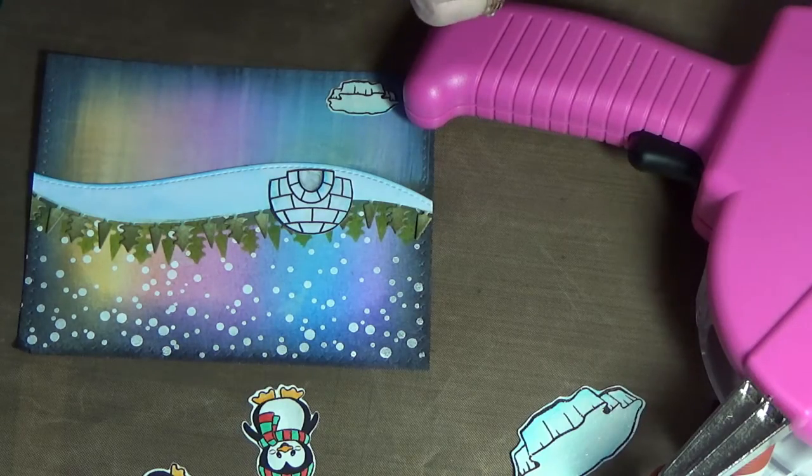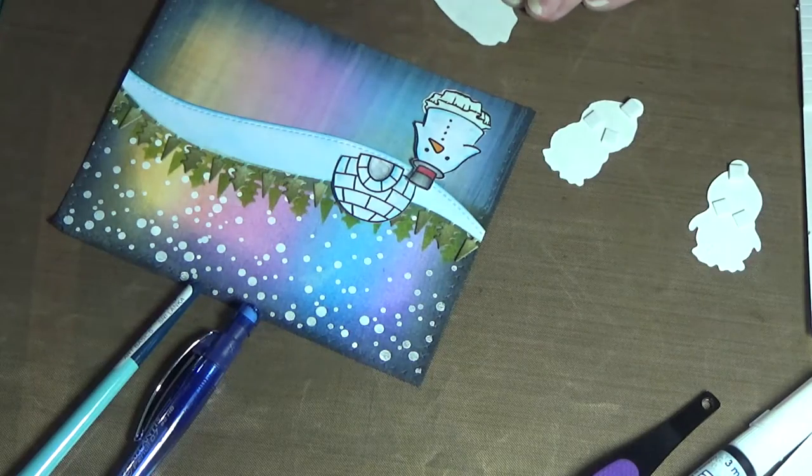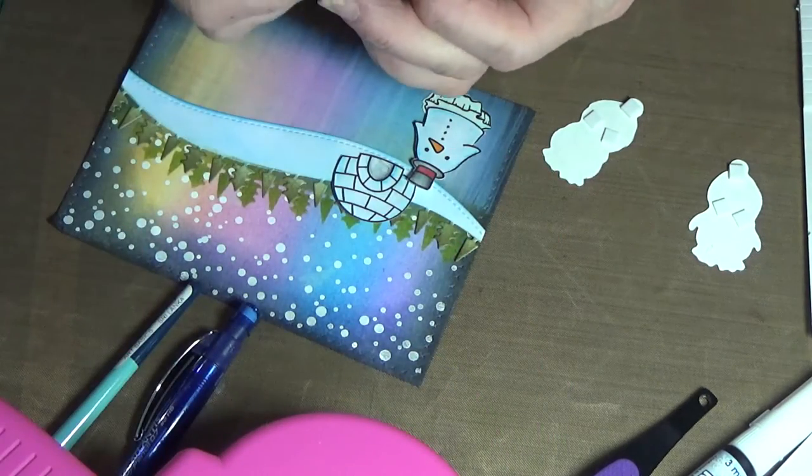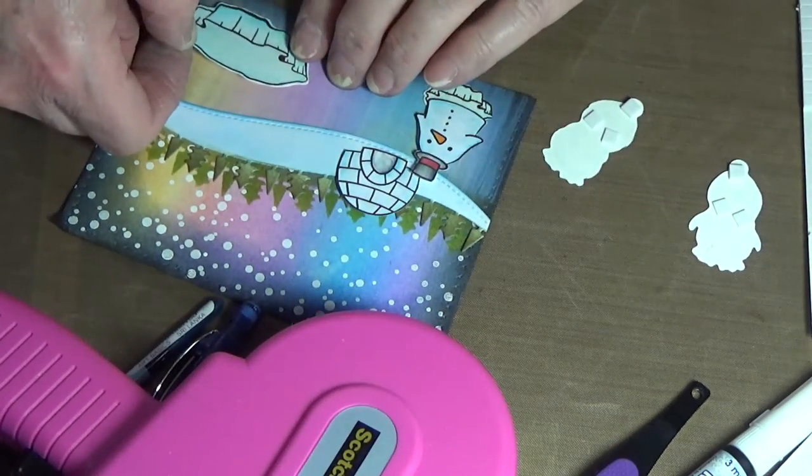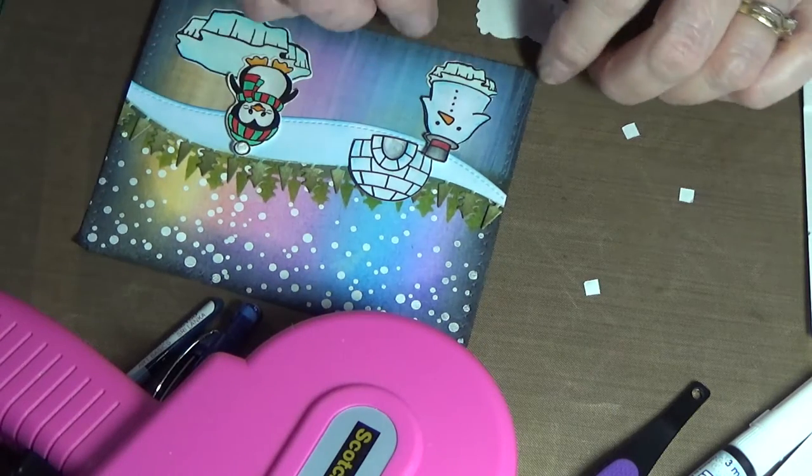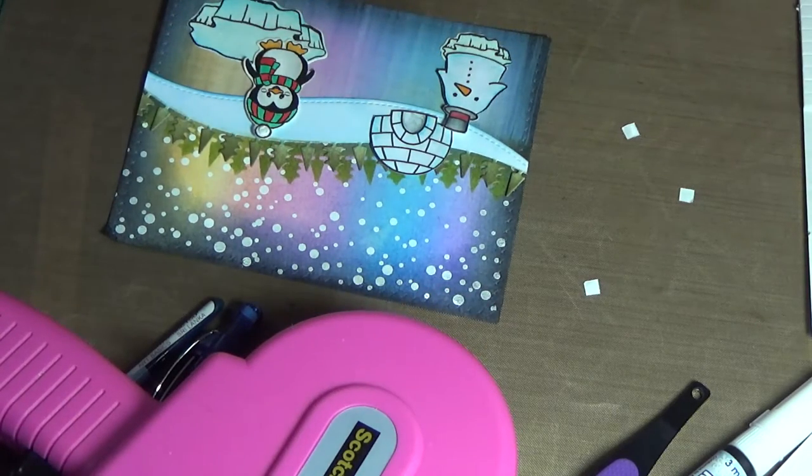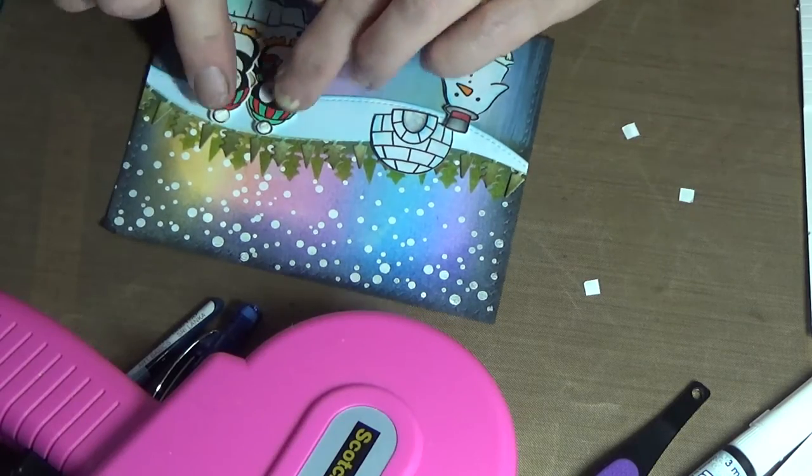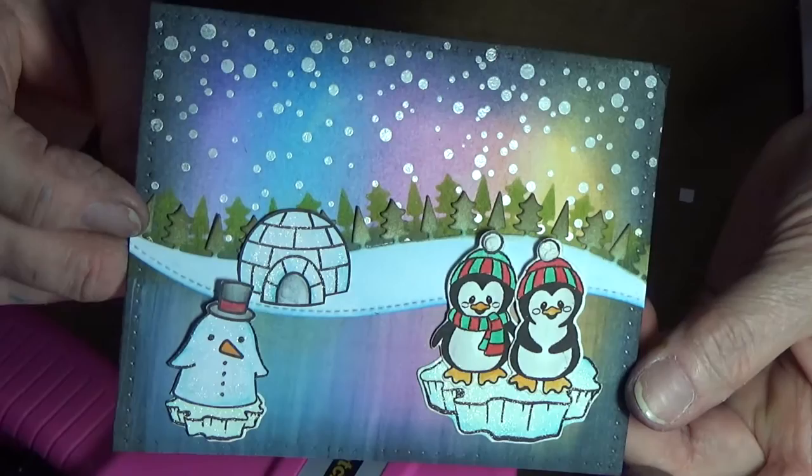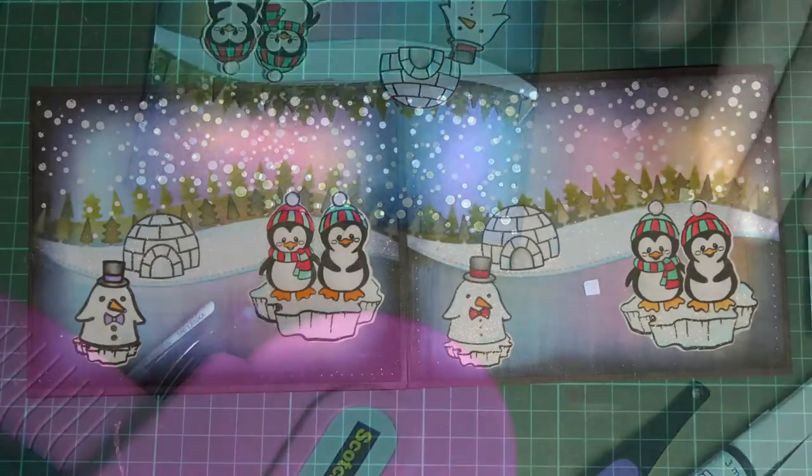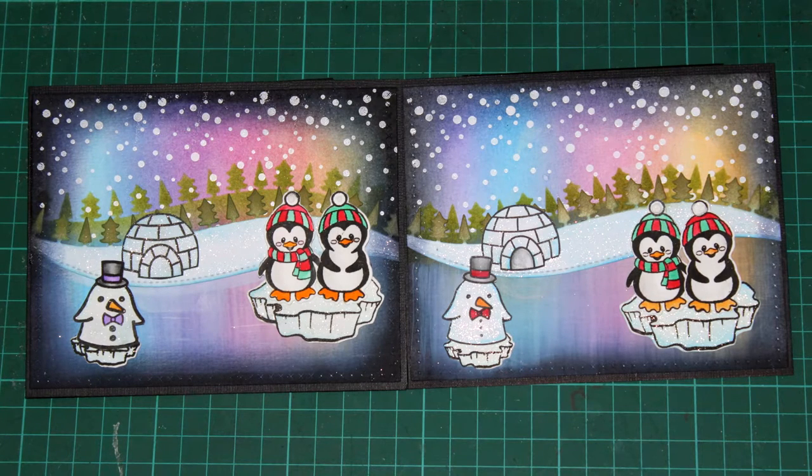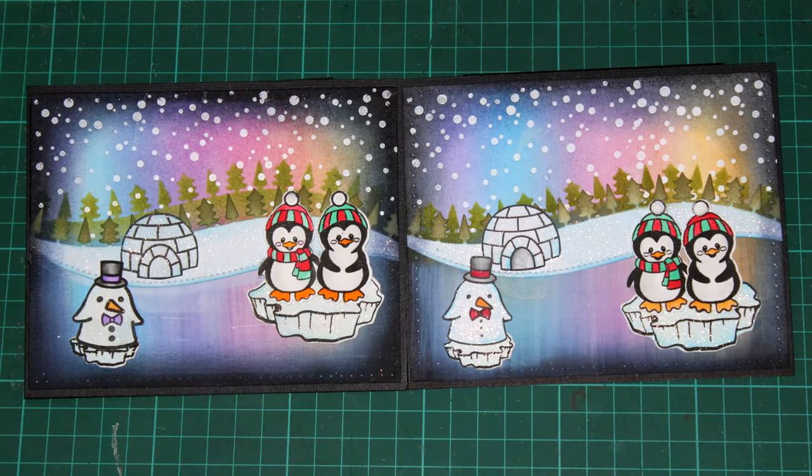I've done the same with the penguins—just to give them that little bit of a lift off the card at the top to make it appear that they're actually standing on something rather than laying flat. The igloo is just stuck straight down flat. You can see it's got that little shadow there behind it.